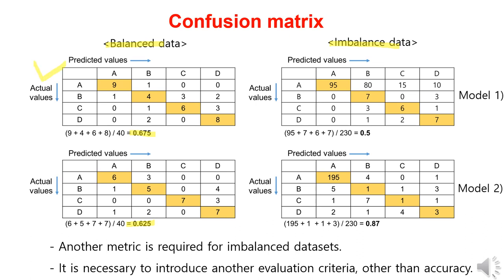On the other hand, let's examine the case of imbalanced data. For model one, the accuracy is 0.5, while for model two, the accuracy is 0.87. Can we say that model two is the better model based on the accuracy? In the case of model one, although the accuracy is low, it is reasonably accurate for classes B, C, and D. However, for model two, it is only accurate for class A and has low accuracy for the remaining classes B, C, and D. In other words, model two tends to predict almost everything as class A. In such cases, relying solely on accuracy for evaluation is not sufficient, and other evaluation metrics are required.